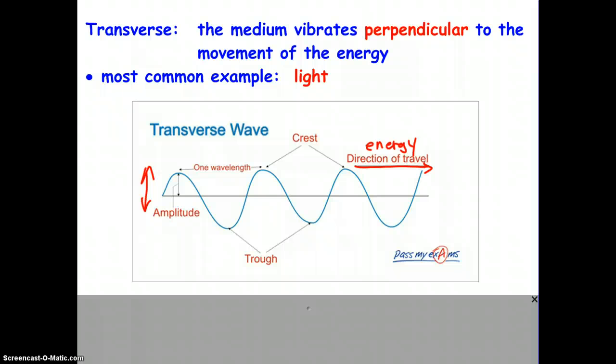On this wave, we also have the term crest, which are the peak of the waves, and the term trough, which is the bottom of the waves. We have the term amplitude, which is the distance from the rest position to the peak of a crest or the bottom of the trough. The rest position would be what the medium would be doing if there was no energy traveling through it.